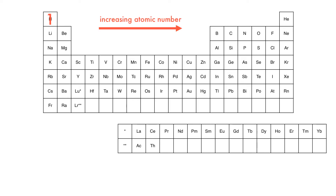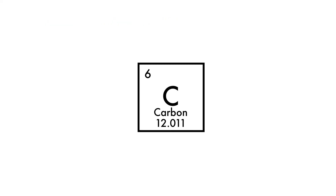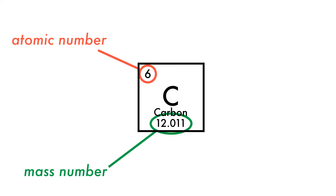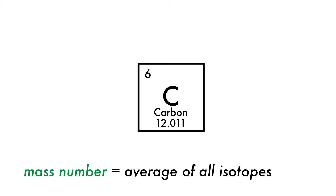The periodic table of elements is listed in order of increasing numbers of protons, from one to more than a hundred. While the atomic number of an element is always an integer or whole number, often the mass number is not a whole number. You might then ask how an atom can contain a fraction of a neutron. The answer is that the mass number represents the average composition of a sample of the element, and not individual atoms. This sample contains different isotopes of the same element.